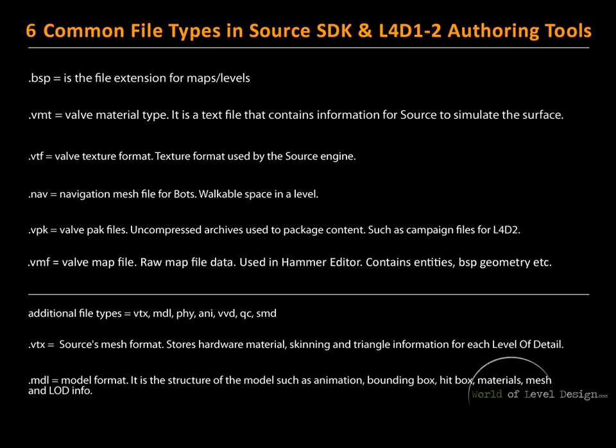In the following tutorial we will cover six common file types in Source SDK and Left 4 Dead authoring tools. They are BSP, VMT, VTF, NAV, VPK, and VMF.